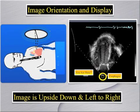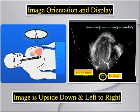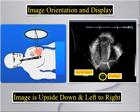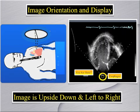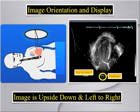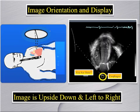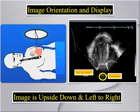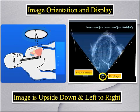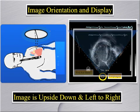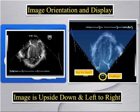Complicating image analysis further is the fact that by convention, the TEE image is displayed on the screen in a manner which is inverted both vertically and horizontally from the way the heart sits anatomically in relationship to the probe. Here we see how the image is obtained from the point of view of the probe in the esophagus, and then rotated for display on the screen.